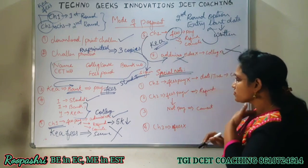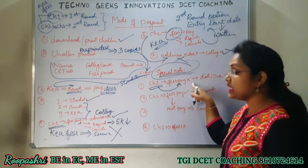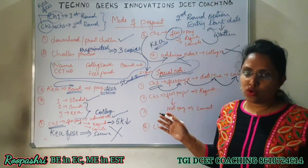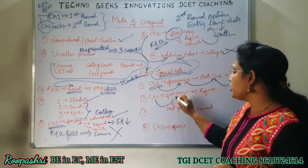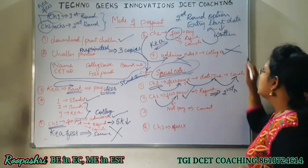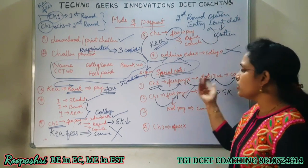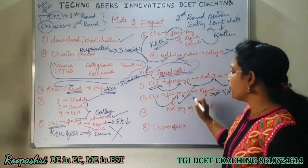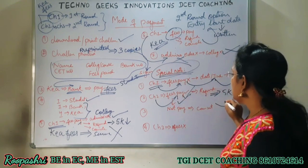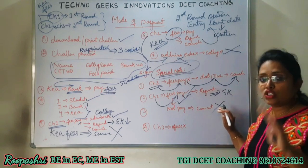Okay, so choice 2 special note: if you click choice 2 and pay the fees, on the specified date and time your seat will be cancelled and you cannot participate in the next round. If you click choice 2 and pay the fees, regarding refund - the condition is: before the second round option entry last date, if you follow the refund instructions, 5,000 will be deducted and the remaining amount will be refunded.